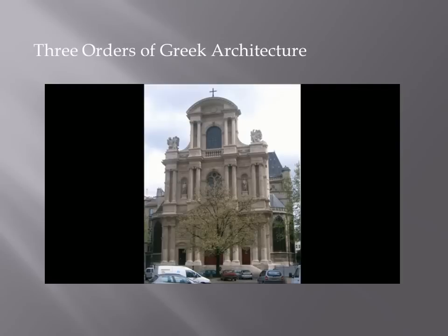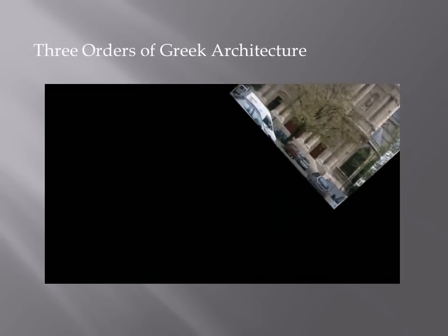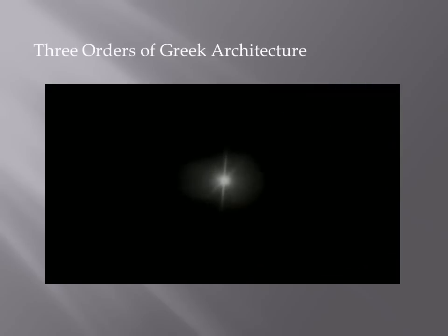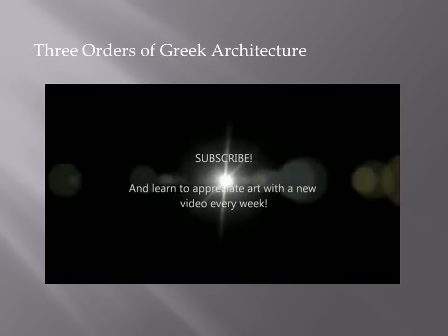This is the Church of Saint-Gervais-et-Saint-Protais in France. Next time you're out and about, check out the columns on buildings and see if you can identify which classical order they belong to — Doric, Ionic, or Corinthian.